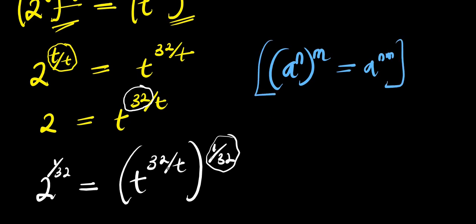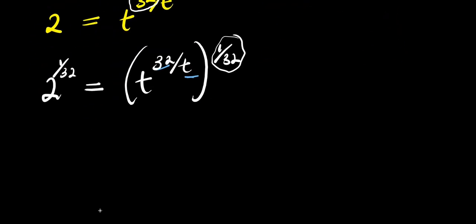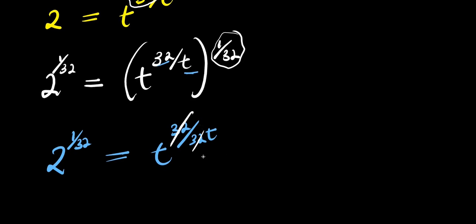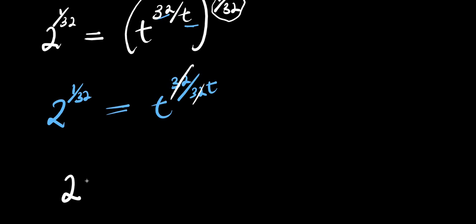So we multiply this out: 32 multiplied by 1 is 32, and t will multiply 32, giving us 32t. So what we are having here is 2 to the power of 1 over 32, equals t to the power of 32 divided by 32t. The 32 cancels with the 32, leaving us with 2 to the power of 1 over 32, equals t to the power of 1 over t.